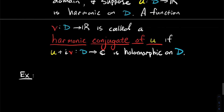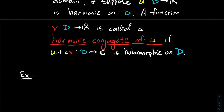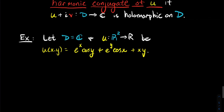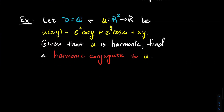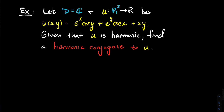Let's look at an example showing a method: if you're given a U, how do you find its harmonic conjugate? Let D be the whole complex plane, and let U be the function e^x cos(y) + e^y cos(x) + xy. U is harmonic — you could check that if you want. What I want to do is find the harmonic conjugate of U on the complex plane. We need to find a function V such that U + iV is holomorphic on ℂ.